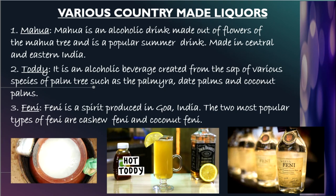Now let's talk about various country made liquors. First is Mahua. Mahua is a traditional tribal drink that is made in different parts of central and eastern India. It is made from the Mahua tree, whose scientific name is Madhuca longifolia, and also from Chaua good, which is also called granular molasses. So Mahua is made basically from the flowers of the Mahua tree and the Chaua good plant.